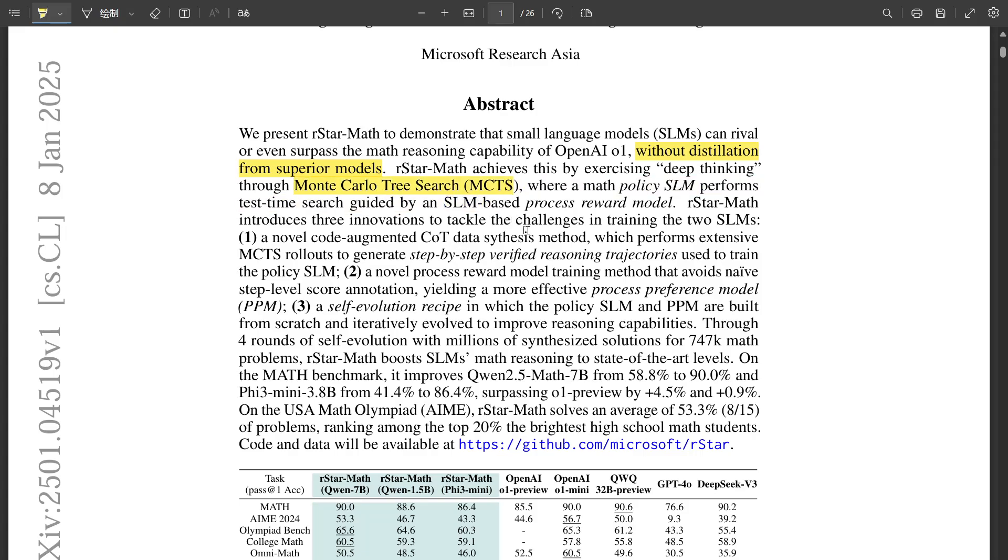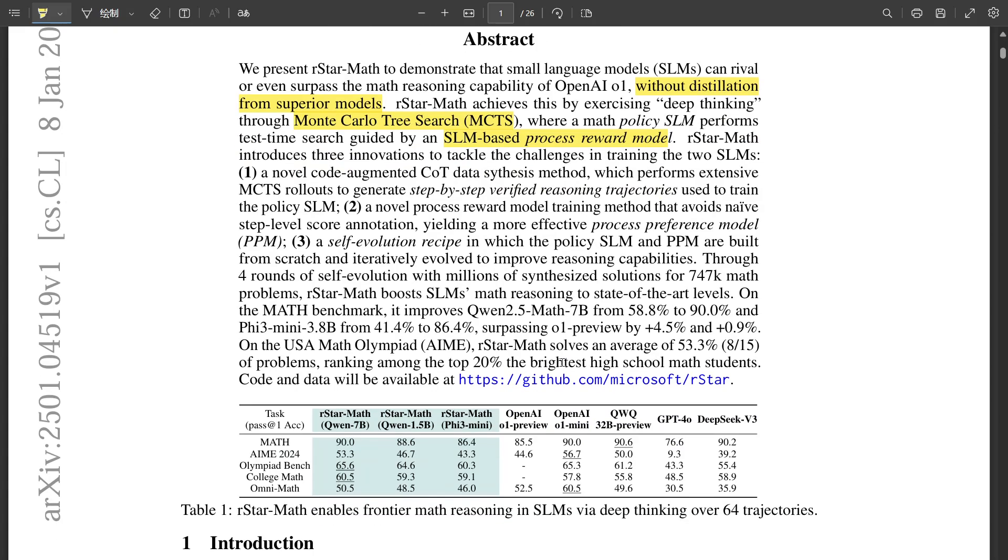So what makes R-Star Math so interesting? Well, it really focuses on the process, not just the results. It's like diving into the how of problem solving, making AI like a much more effective mathematical thinker. And it suggests we don't necessarily need those massive resource-heavy AI models to get impressive results. Even smaller models can become math whizzes if we teach them to think more deeply.